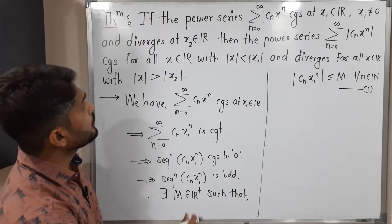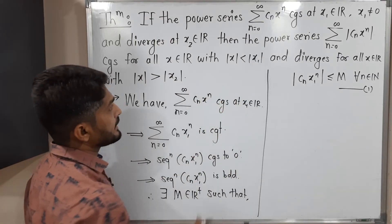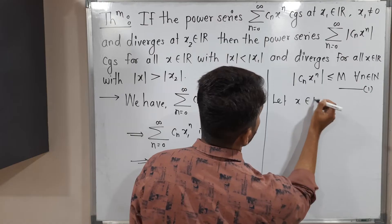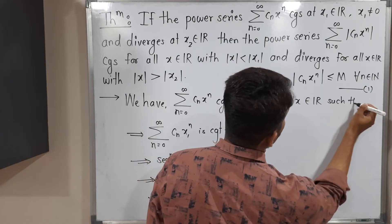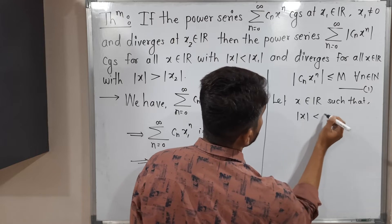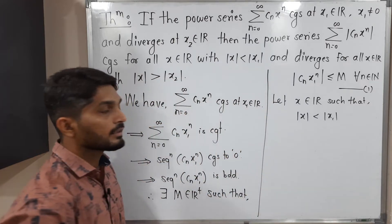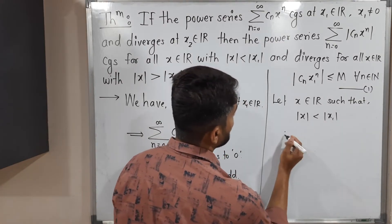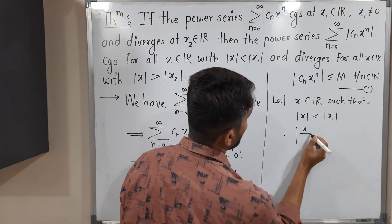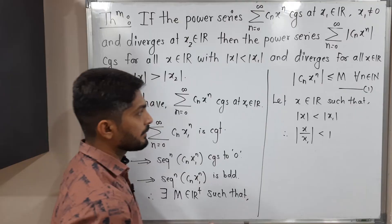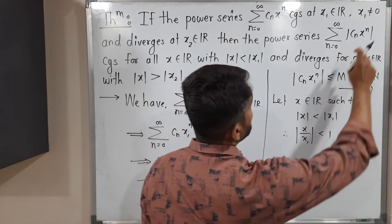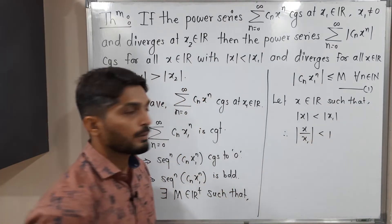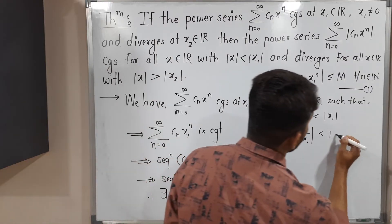After that, we have to prove that if you have any x with mod less than mod of x1, then for that x the series is convergent. So let x belong to the real numbers such that mod x is less than mod of x1. If we divide both sides by mod x1 — which is nonzero as clearly mentioned — we get mod x upon mod x1 is less than 1. Let us call this inequality number 2.